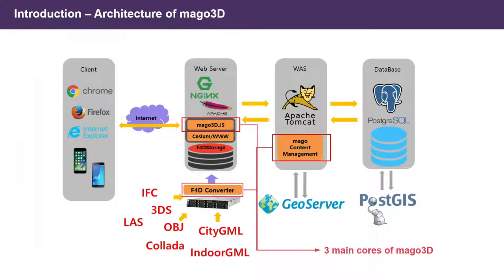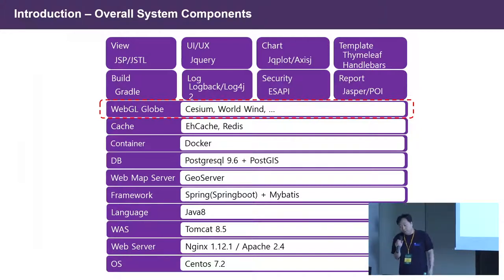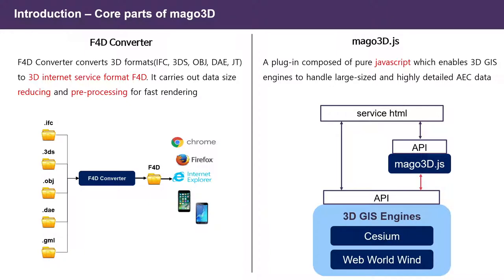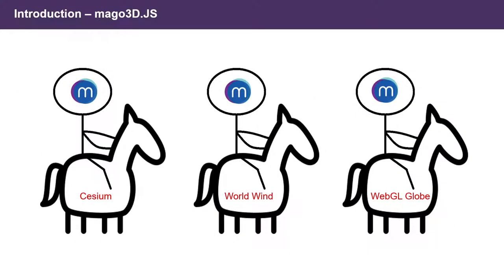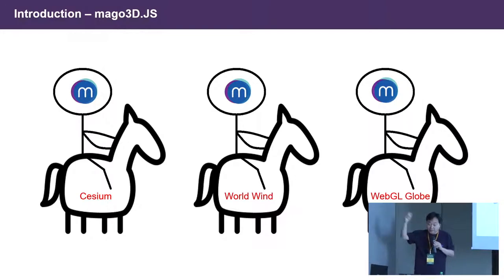There is a content management system at the heart of Mago 3D. Almost all the components we currently use are open source. The core parts are F4D on the left side and Mago 3D.js on the right — a JavaScript library to enhance visualization and rendering quality. Mago 3D runs on top of existing WebGL globes like CesiumJS or WebWorldWind, and we can easily plug in our rendering engine to extend their features.